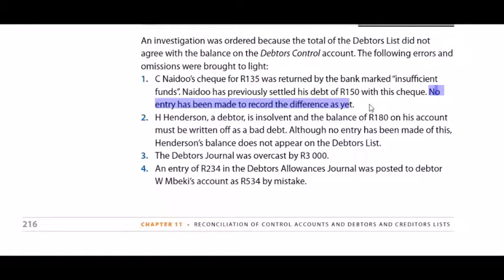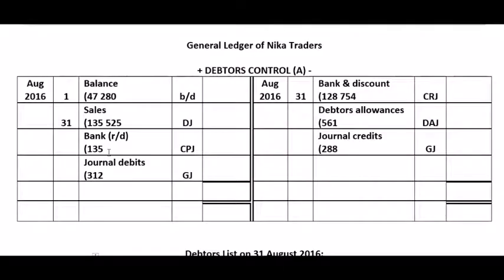No entry has been made to record the difference — highlight that word 'difference.' The check was already cancelled; it's just the 15 Rand discount that hasn't been cancelled in the general journal. Looking at the control account, you'll see the check was cancelled in the cash book journal, so you have to increase the value of the journal debits in the general journal. When we cancel discount on an RD check, we debit debtors control because the debtor now owes us more money again. So our total debits for debtors control is now 15 Rand more.